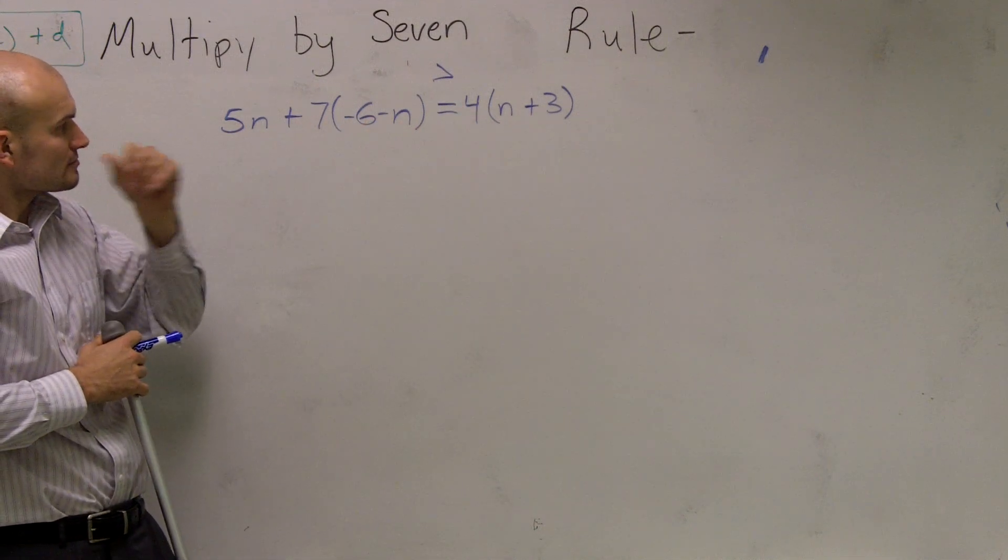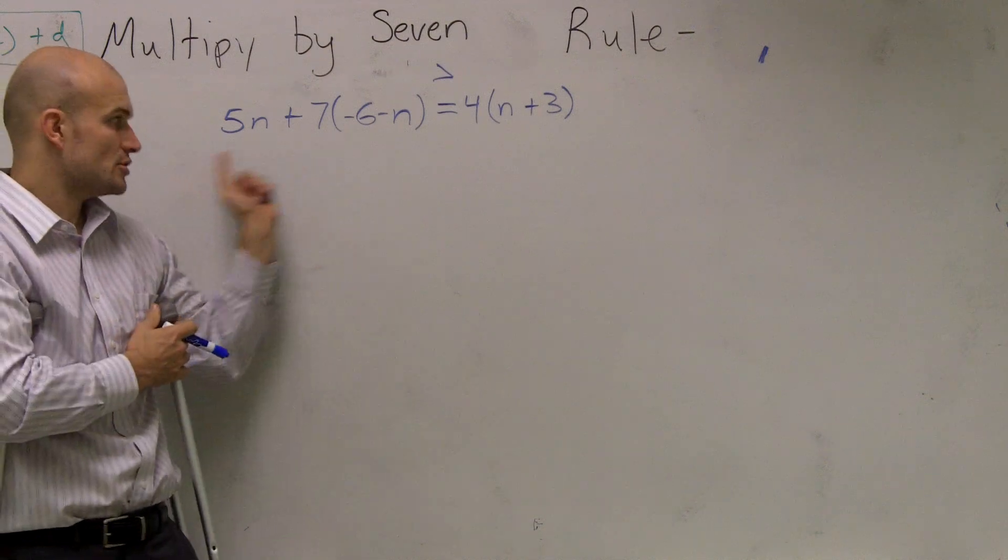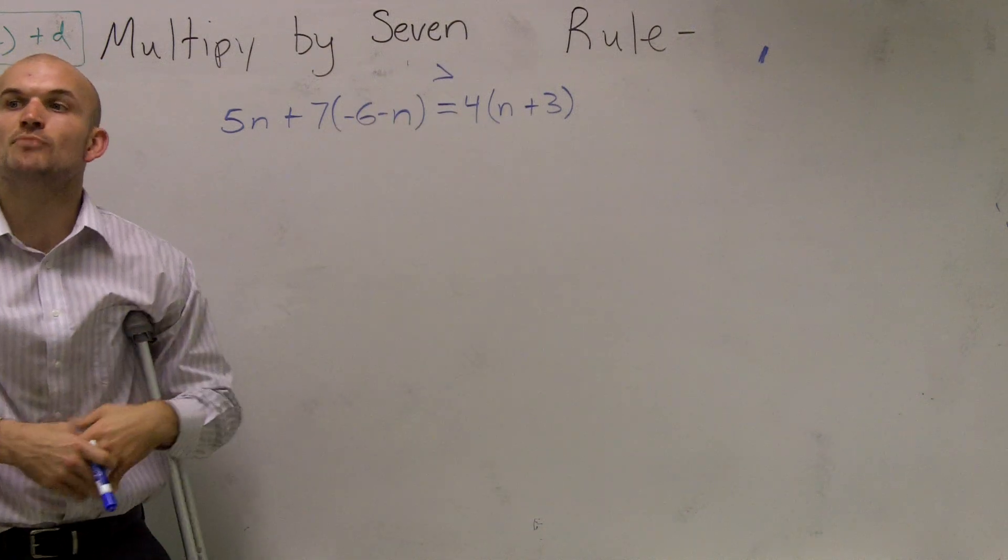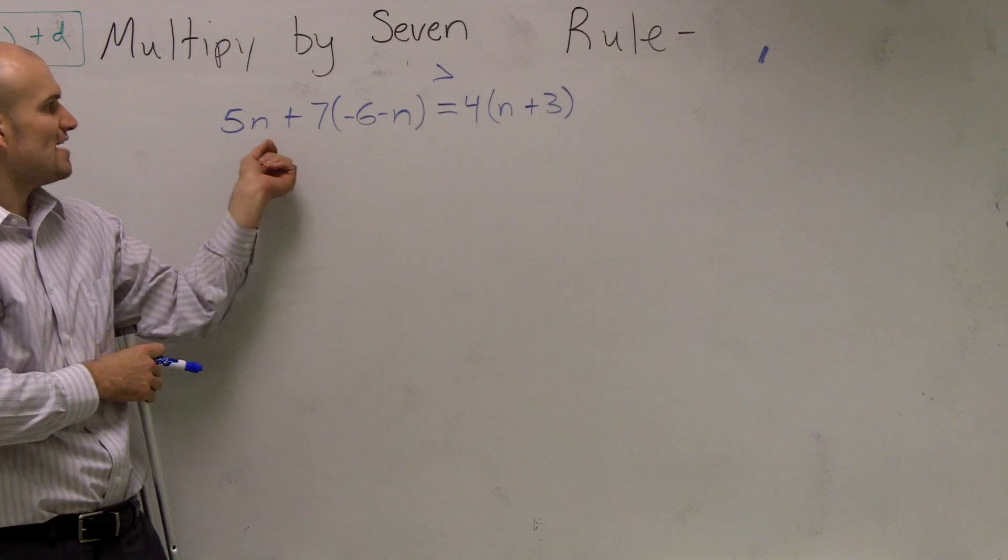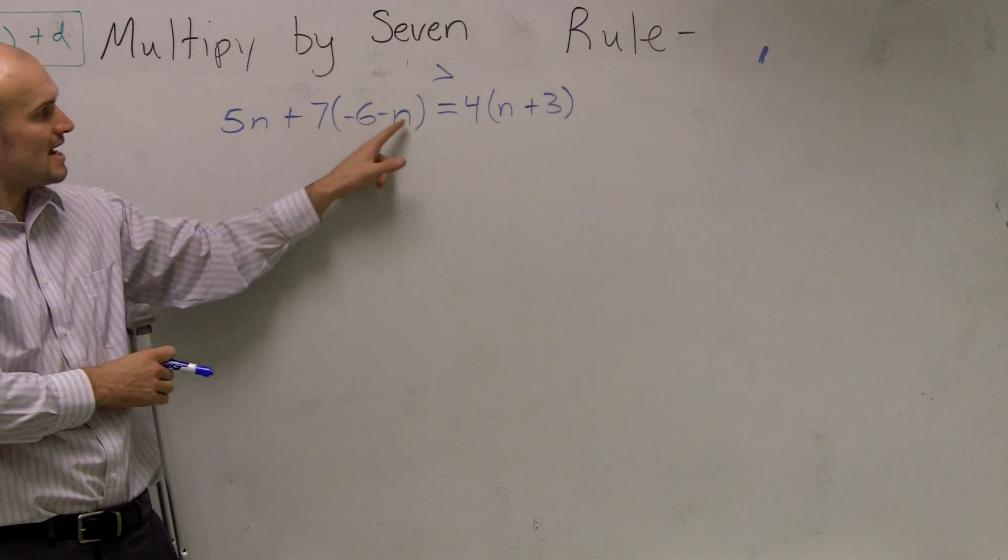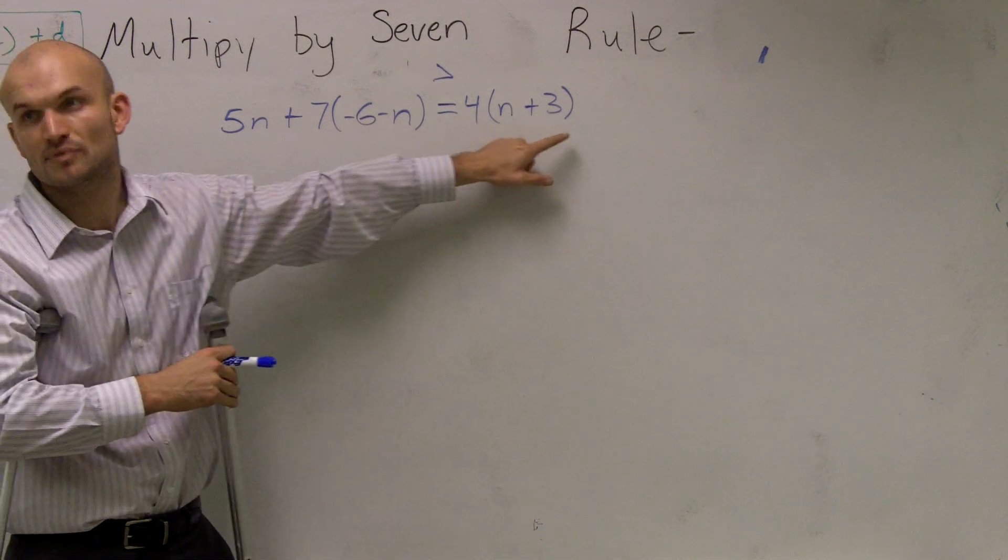However, the next thing I want to do is it goes, parentheses, exponents. There's no exponents. And then it goes to multiplication or division. Well, when I look up here, I see, Andre, that I do have multiplication. I have 7 times negative 6 minus N and a 4 times N plus 3.